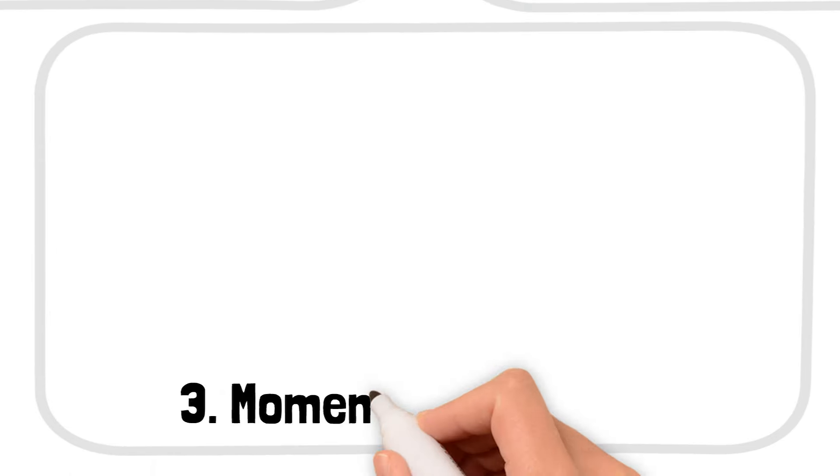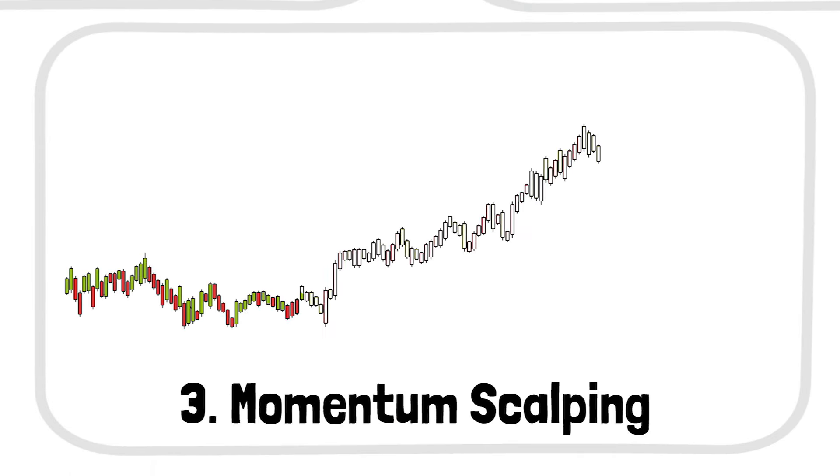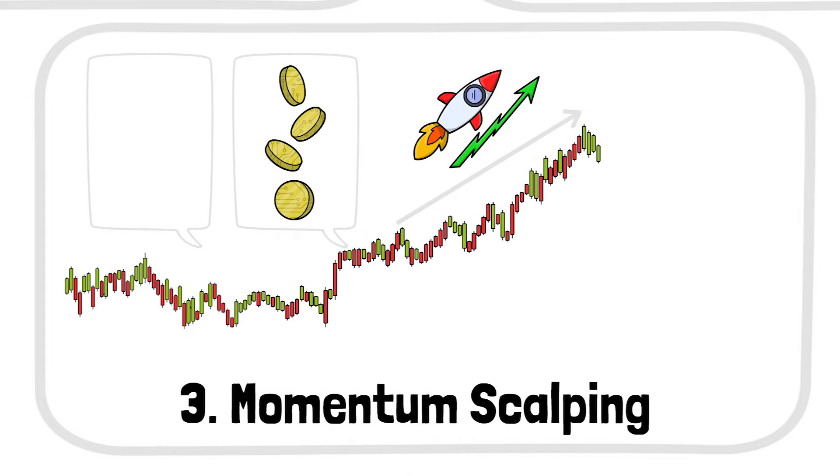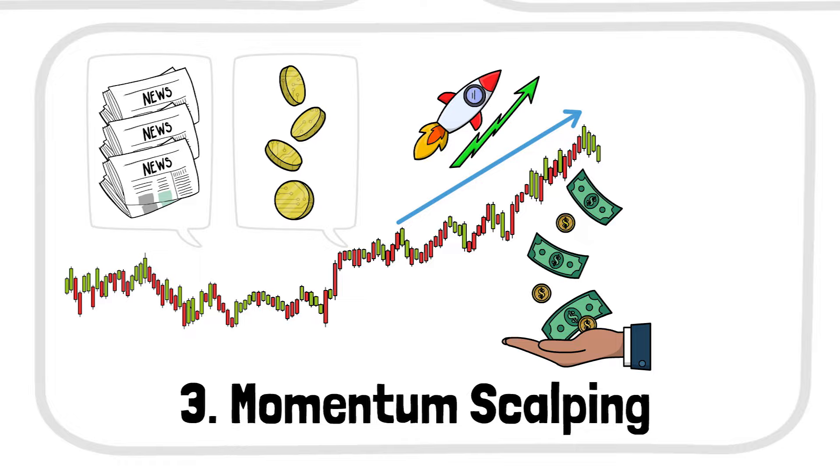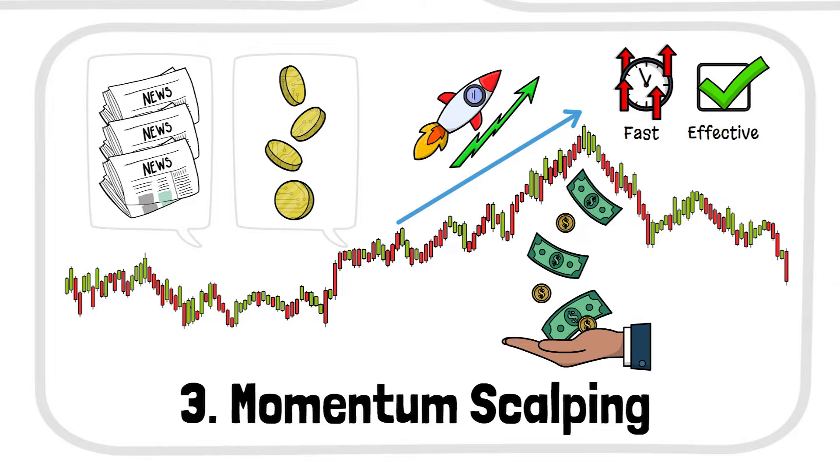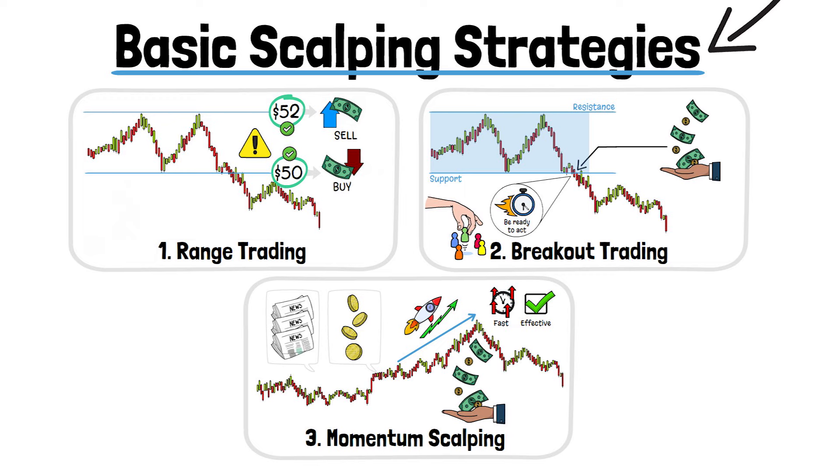Finally, we have momentum scalping. This strategy is all about catching a strong price movement caused by high volume or news. You jump into the trade as the price starts moving quickly, then exit before the momentum fades. It's fast-paced but highly effective if you time it right.